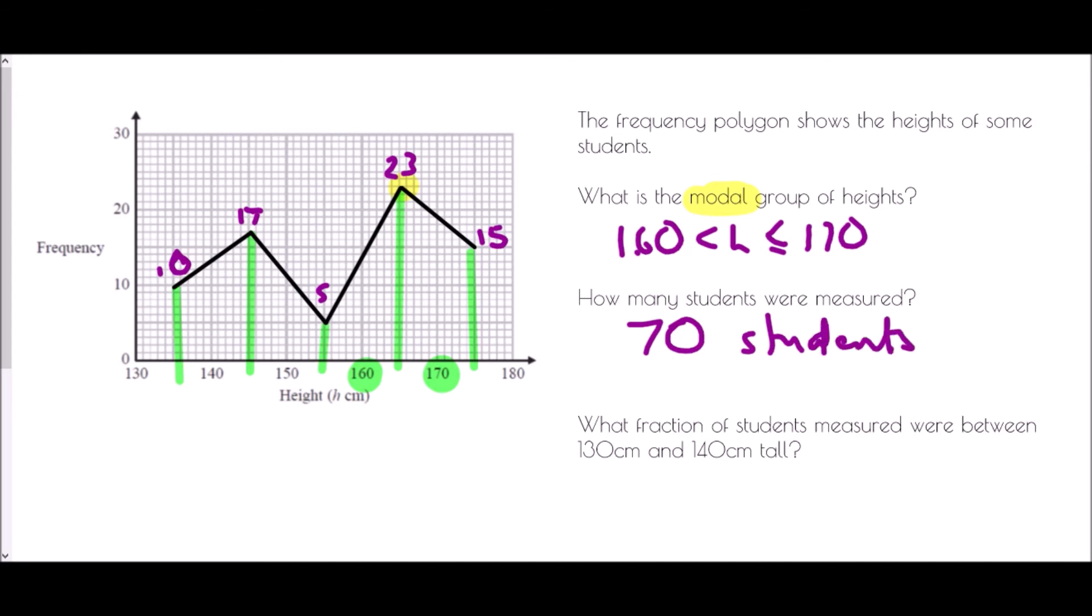And then it asks what fraction of students measured were between 130 and 140 centimeters tall. Well again, in terms of the group 130 to 140, well the value must be this one here, the 10. So there were 10 students who were between 130 and 140 centimeters. It asks what fraction, and so that is out of the total number of students. So 10 out of 70, and if we simplify that it will be 1 out of 7.